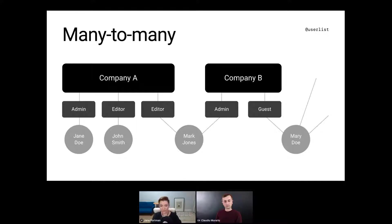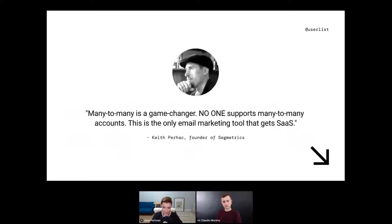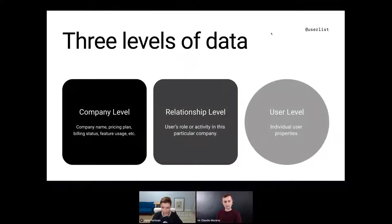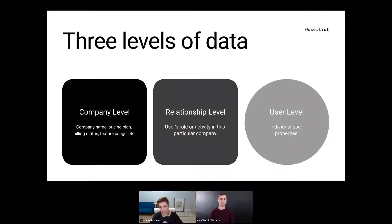The way we solved it in UserList — and we decided to implement many-to-many from the start — is by introducing three levels of data, not just two. Some data exists at the user level, typically something that relates to the user profile in general, like individual settings, their name, their profile picture. Then you can have information at the company level: the typical stuff like company name, billing plan, billing status, what features they're using, and their global total activity in the account.